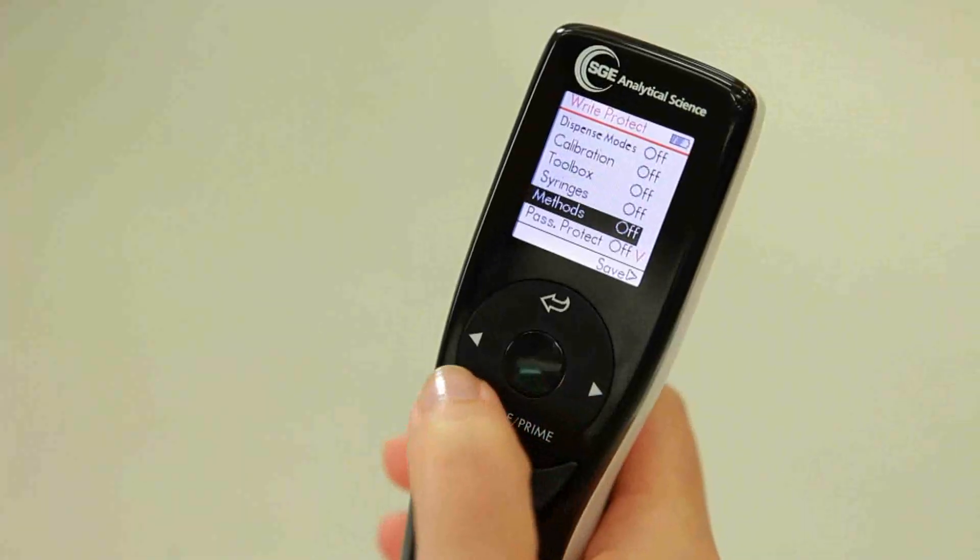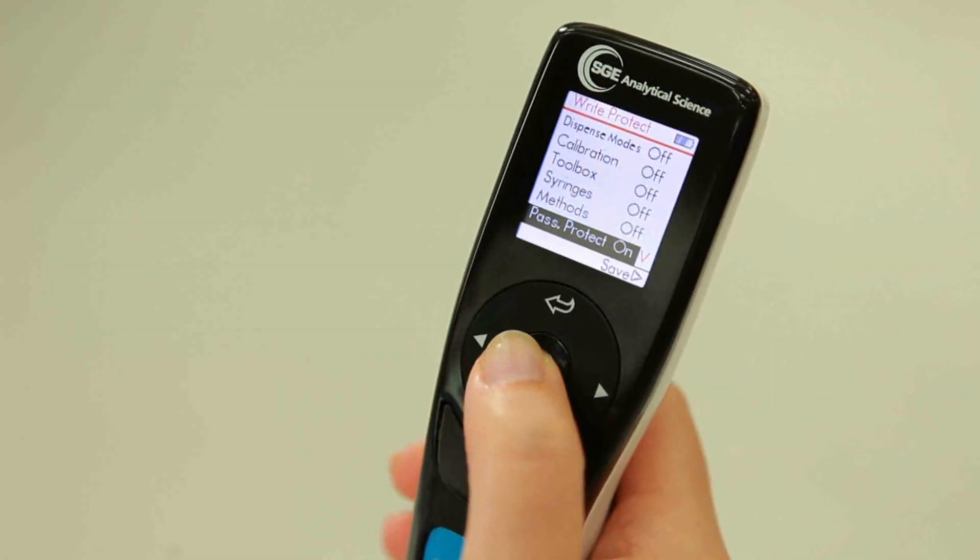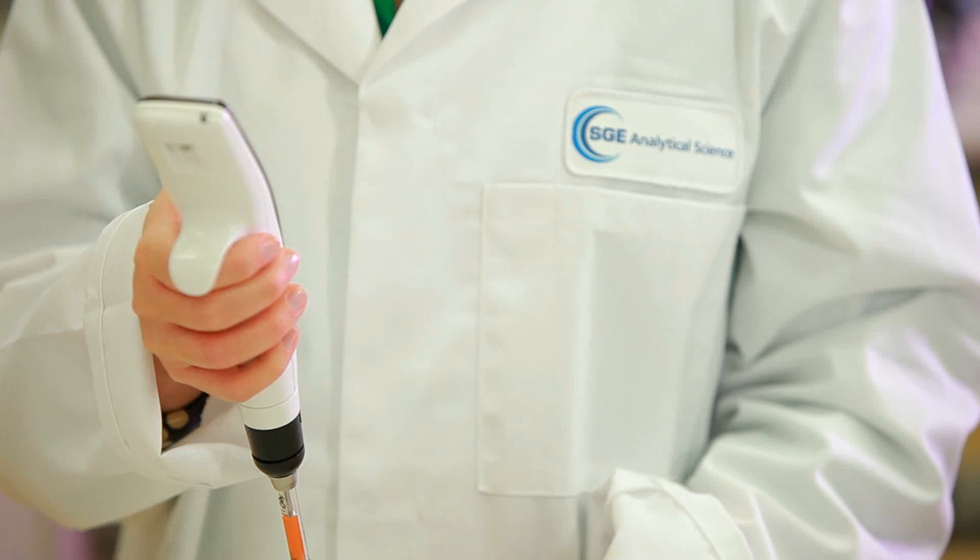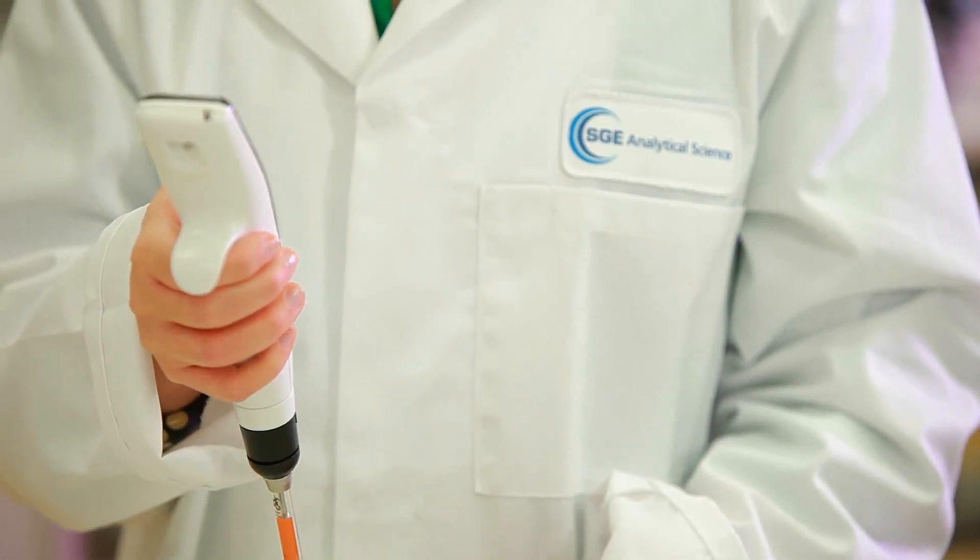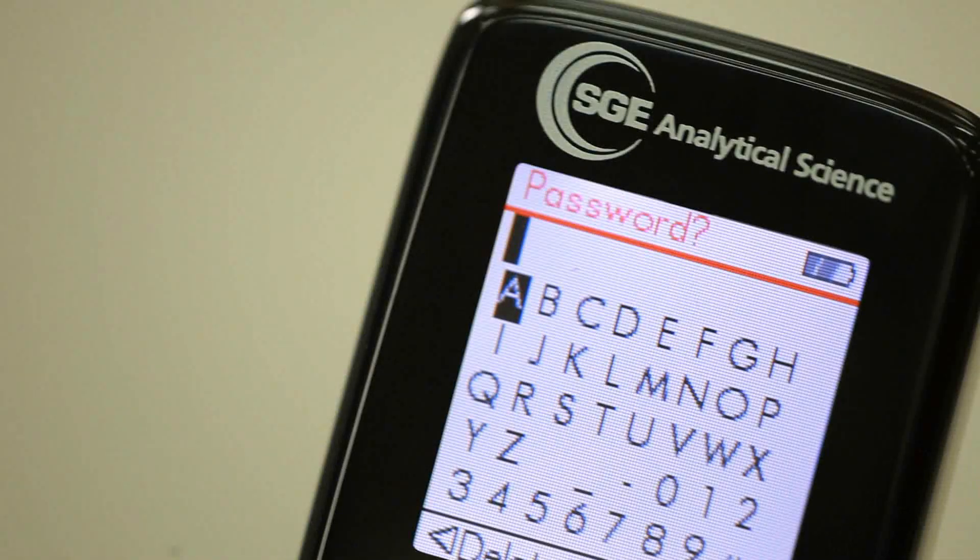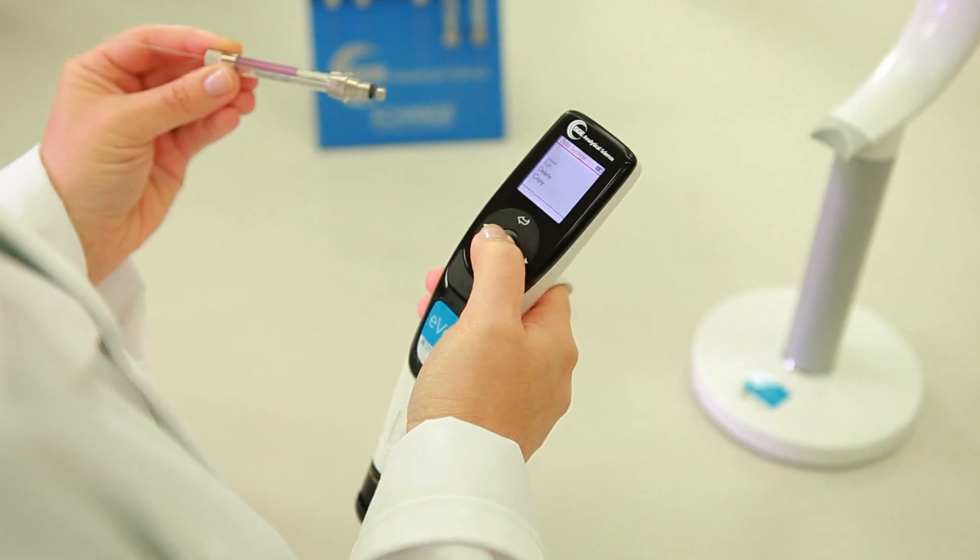To set a password, turn the password protect option to ON and press SAVE. Enter the desired password into the password entry screen using the scroll wheel and press SAVE to set the password. Once set, this password will need to be entered every time the Write Protect menu is accessed.